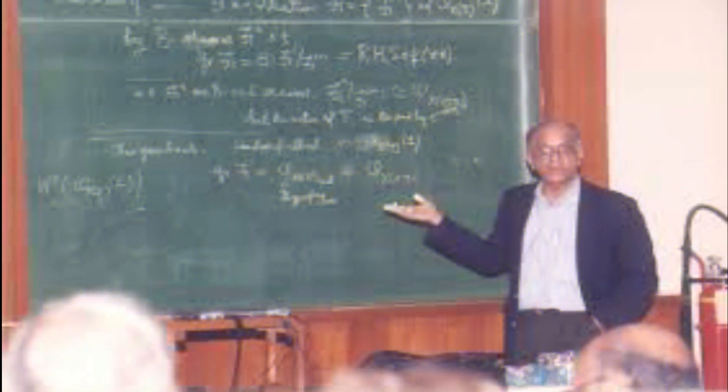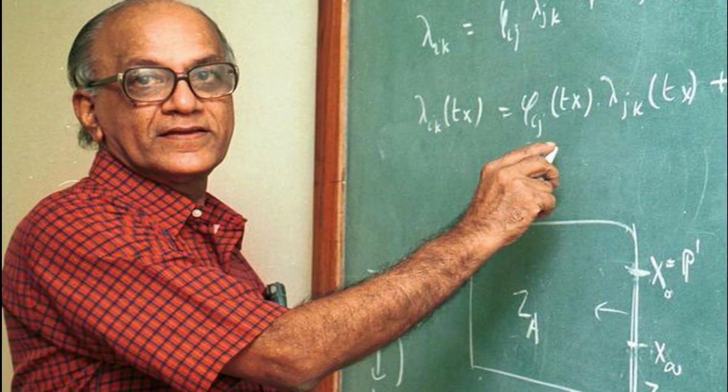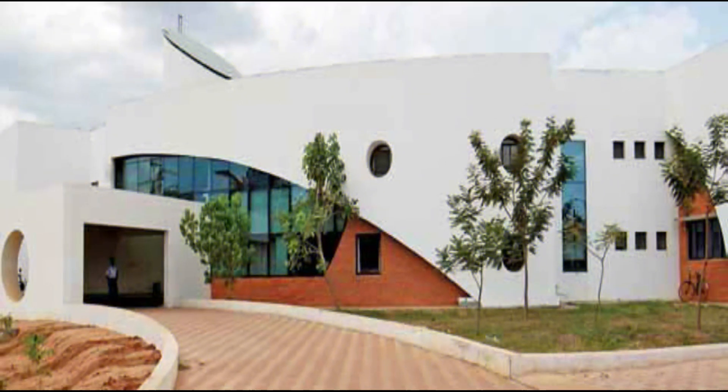C.S. Seshadri is an eminent mathematician known for the Seshadri constant named after him. He was born on 29th February 1932 in Kanchipuram. The well-known Indian mathematician was awarded the Padma Bhushan in the year 2009 for his outstanding contributions in mathematics. Seshadri's deep insights and significant accomplishments have greatly contributed to shaping India as a major centre for mathematics in the post-independence era, particularly in the field of algebraic geometry. His work in establishing the Chennai Mathematical Institute (CMI), literally brick by brick, is as noteworthy as his scientific pursuits.